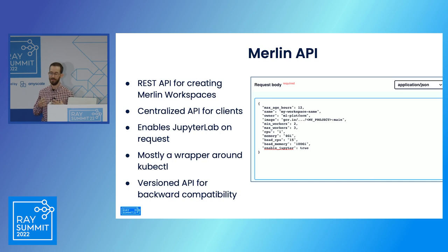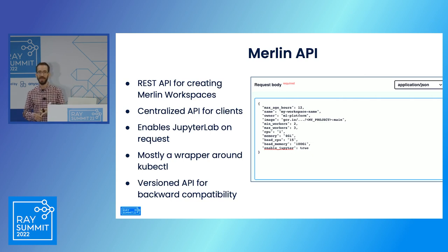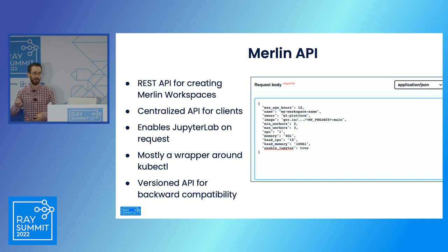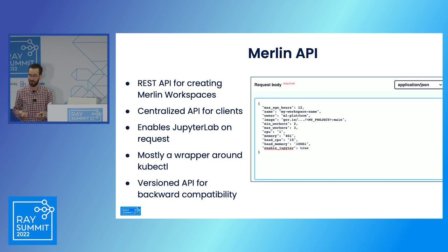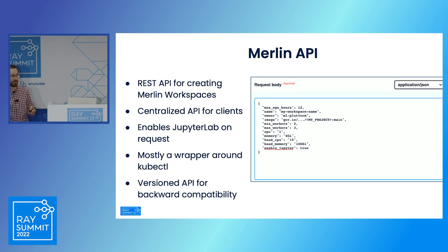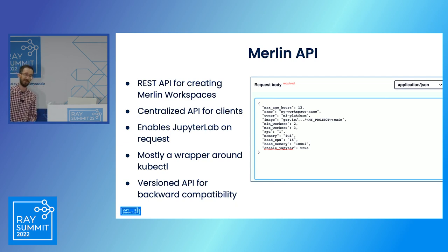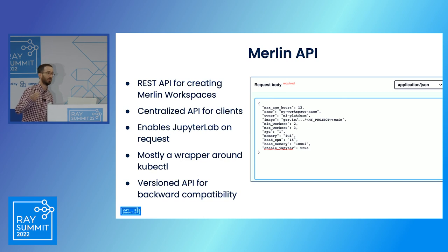The Merlin API is a REST API that allows users to create, update, and delete Merlin workspaces and the Ray clusters behind the scenes. Users can define parameters for their ML workflow: the name of the Merlin workspace, the owner so we can keep track of it, the base image the workspace and Ray cluster will run with, the min/max workers for scalability, the amount of CPUs, memory, the GPU type and number of GPUs they want to use, and they can enable JupyterLab to run on the head node for direct access into the Ray cluster.